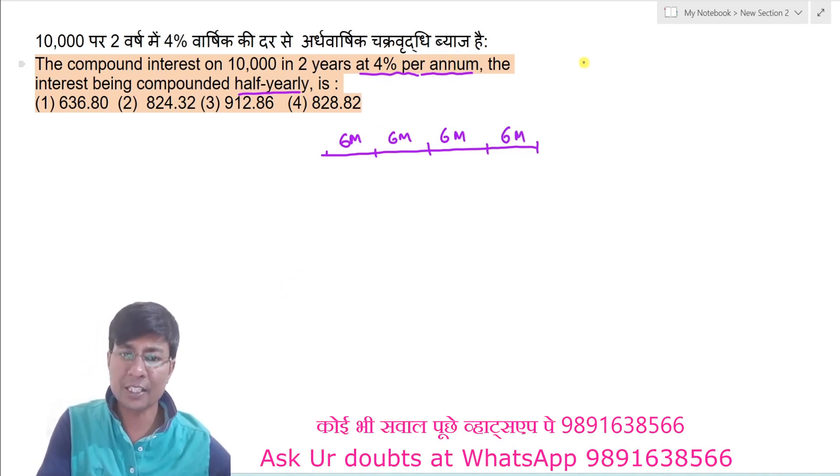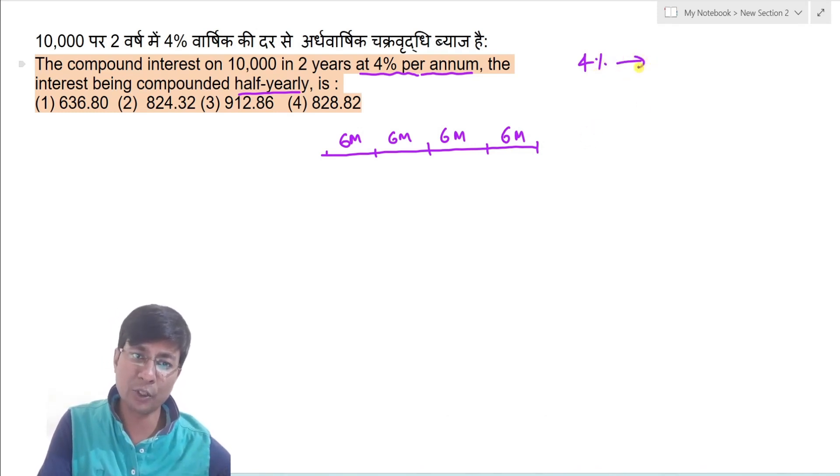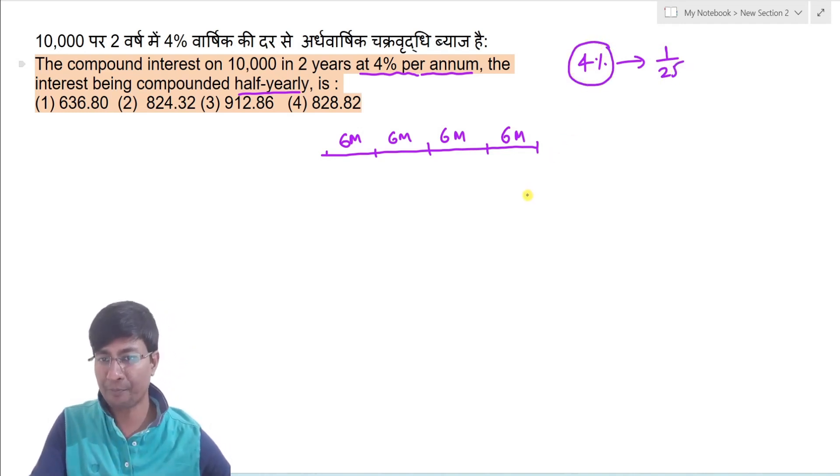Initially rate of interest kya tha, four percent hai. Four percent ko ratio terms me change kya hoga, woh hoga one upon twenty-five. Lekin ye four percent annual rate of interest tha.